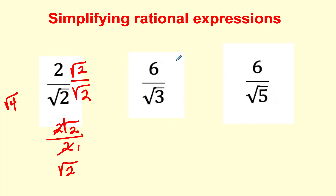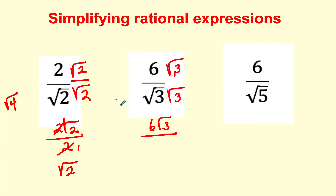We're going to do this again. I'm going to multiply the numerator and denominator by √3. The numerator will be 6√3. The denominator will be √3 times √3, which is √9. And √9 is 3. This is called rationalizing the denominator — the denominator no longer has a square root in it. I'm going to reduce, and the answer is 2√3.